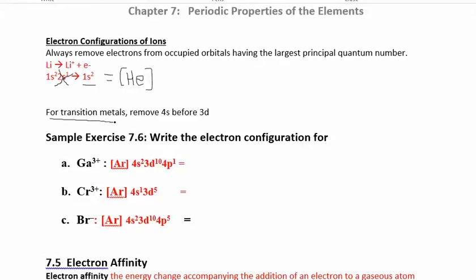For transition metals, there's an important rule: remove the 4s electrons before removing the 3d electrons. If there are 4p electrons, remove those first, then 4s, then 3d. Even though we fill 4s before 3d, we remove 4s before 3d when forming ions, because once the d orbitals start filling, the 4s and 3d switch in relative energy.